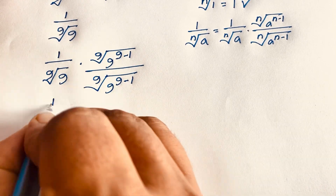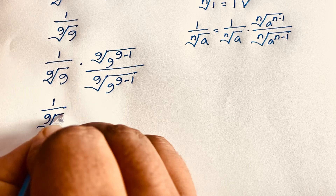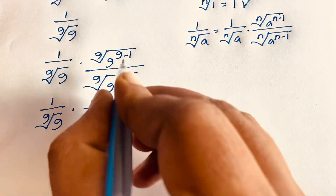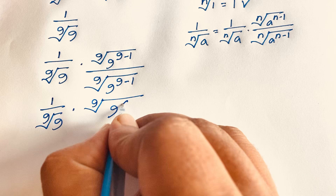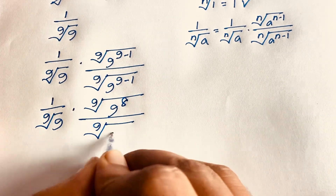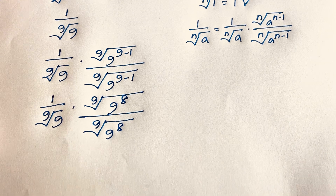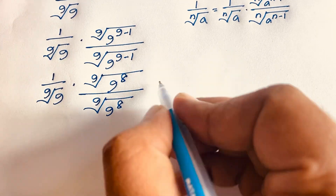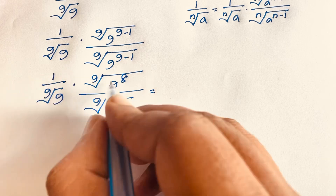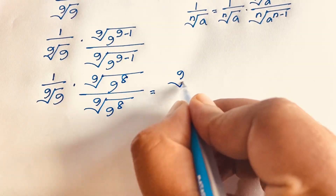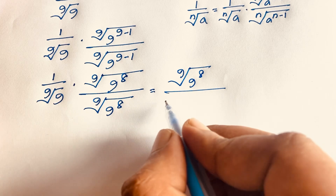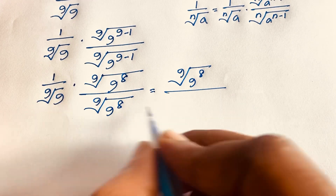Evaluating it, I can say easily it will be 1 over the 9th root of 9, times the 9th root of 9 to the power (9−1), which is 8. So it becomes the 9th root of 9 to the power 8.